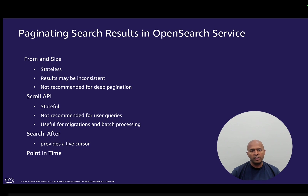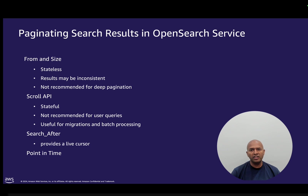The results may be inconsistent because of documents being indexed or deleted. For example, if the user is on page 1 and viewing the results and navigated to second page, during this period the documents might be indexed and the user might be viewing the duplicate results in page 2. It is also not recommended for deep paginations because every page request requires processing all the results and filtering them for the requested page.